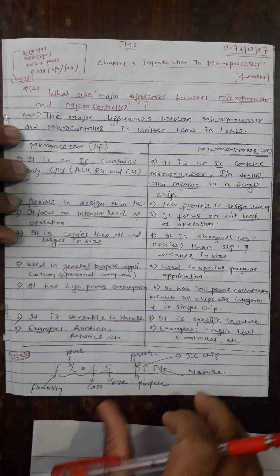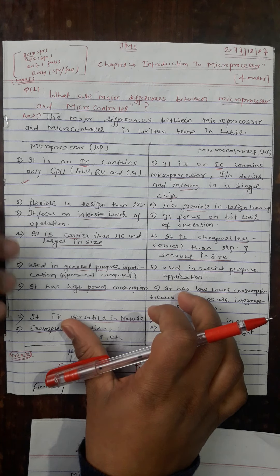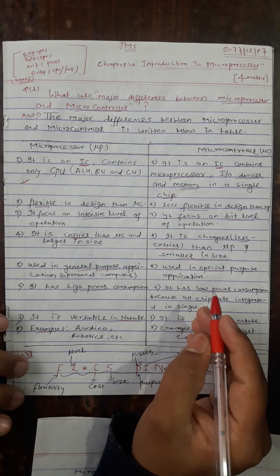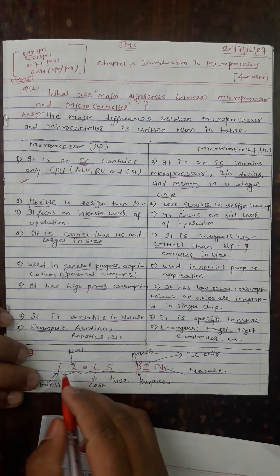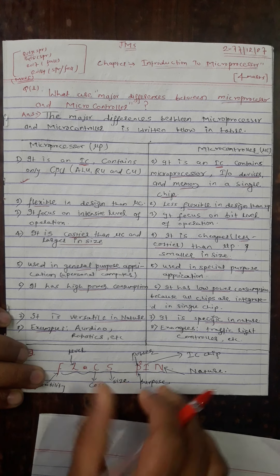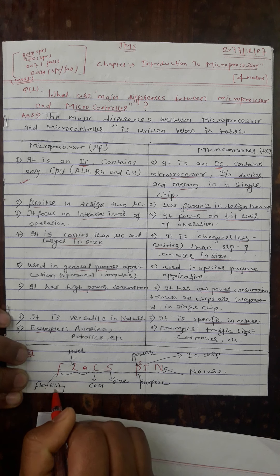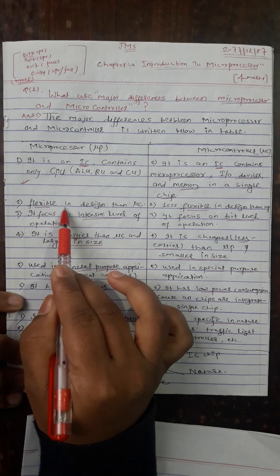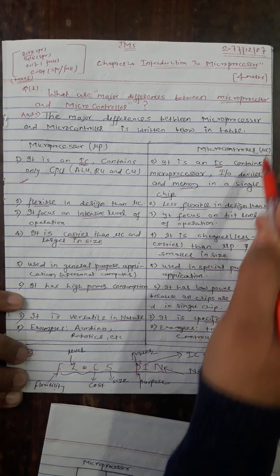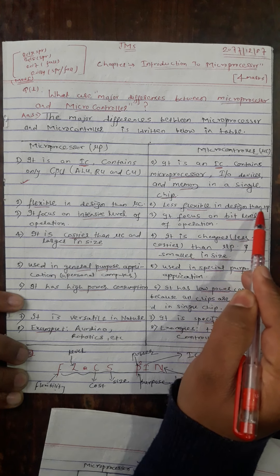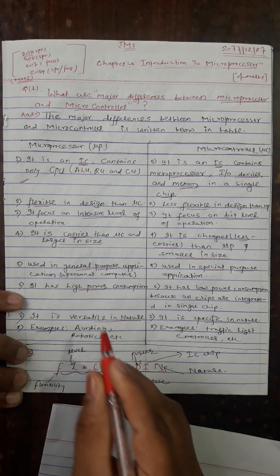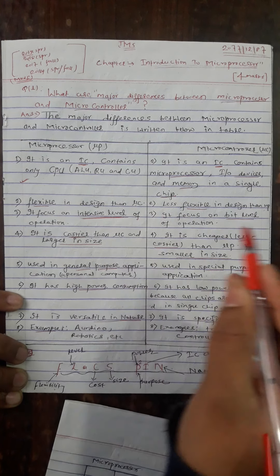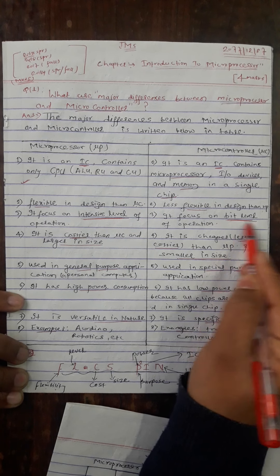A microprocessor is flexible in design compared to a microcontroller. A microcontroller is less flexible in design. A microprocessor focuses on byte-level operations, while a microcontroller focuses on bit-level operations.